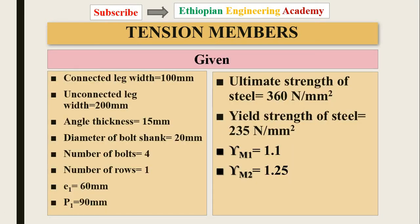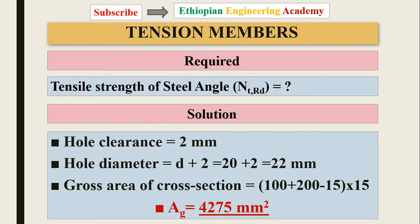The given values are: connected leg width 100 mm, unconnected leg width 200 mm, angle thickness 50 mm, bolt diameter 20 mm, number of bolts four, number of rows one, center-to-center spacing 160 mm, p1 equals 90 mm, ultimate strength of steel 360 N/mm², yield strength 235 N/mm², along with the partial safety factors.